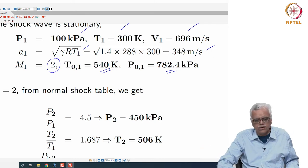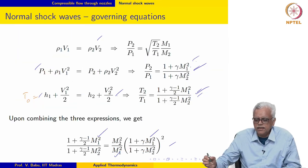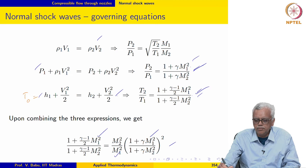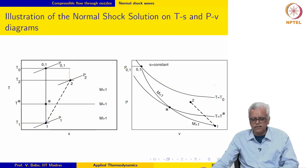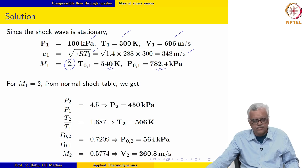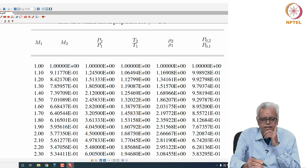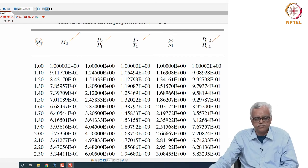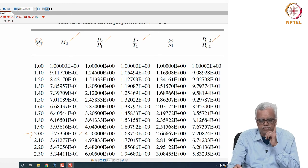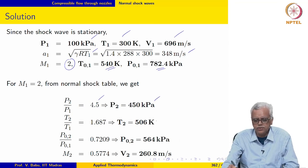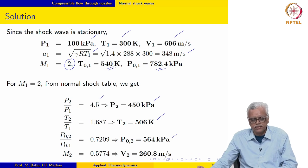Once M1 is known, we can evaluate M2 from the Rankine-Hugoniot expression, and then evaluate P2 over P1 and T2 over T1. This can be done much more easily using the normal shock table, which lists for various values of M1 the downstream Mach number M2, P2 over P1, T2 over T1, and P02 over P01. For M1 equal to 2, we retrieve M2 equal to 0.577, pressure rise factor P2 over P1 equal to 4.5, T2 over T1, and P02 over P01 equal to 0.72.